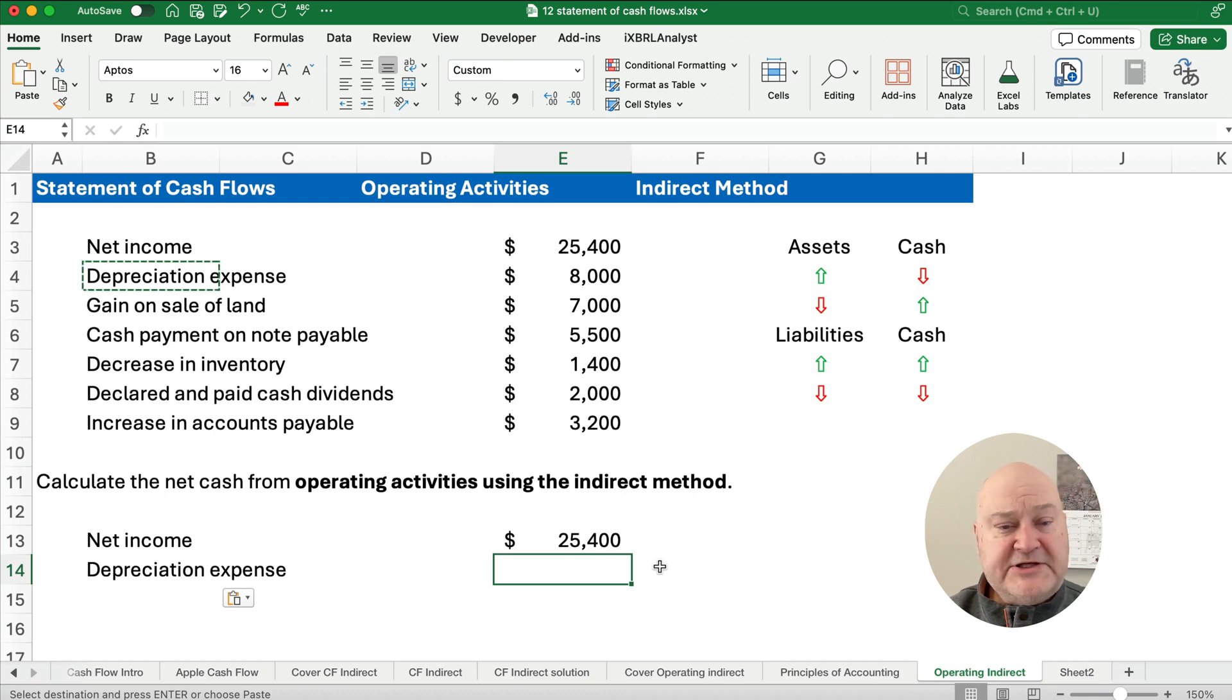Now, depreciation expense is a legitimate expense, but it is non-cash. So if we take it out, it already has a negative. So to take it out, it takes a positive $8,000. So it looks weird, but if you looked at the income statement, it has a negative depreciation expense. We need to take it out, and we add the depreciation. So you can say you add back depreciation to try to get to operating activities.